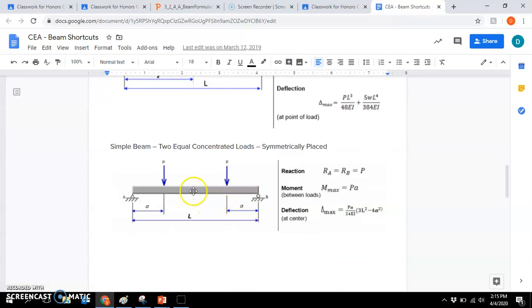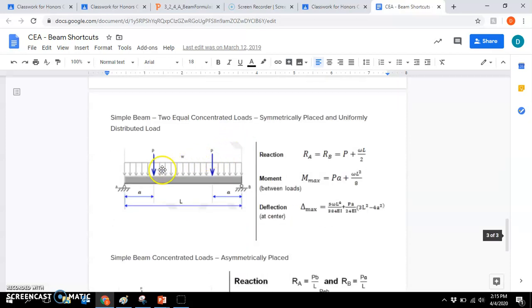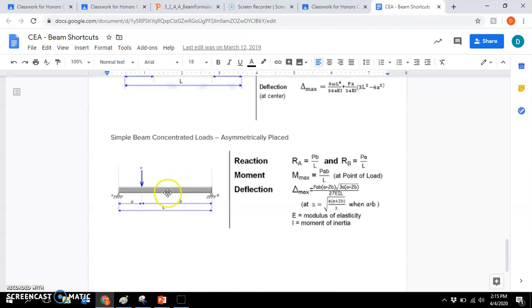Here's if you have two equal concentrated loads. Notice how these are both located a distance of A from the support. And here's where you have the two equal concentrated loads symmetrically placed and a distributed load all in one. And here's an asymmetrically placed. It's placed where A is not equal to B in this scenario. If it was equal to B, then it would be like the first one.